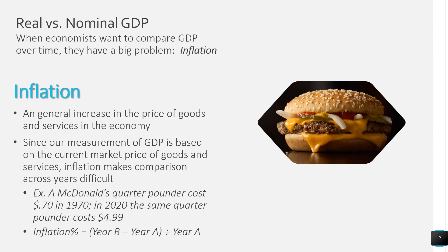So in order to analyze GDP, we have to discuss the difference between real and nominal GDP. When economists want to compare GDP over time, they have a really big problem. And that problem is something called inflation. Inflation means that over time, the price of goods and services in the economy tends to increase. And since our measurement of GDP is based on current market prices for goods and services, inflation makes comparison across years pretty difficult.